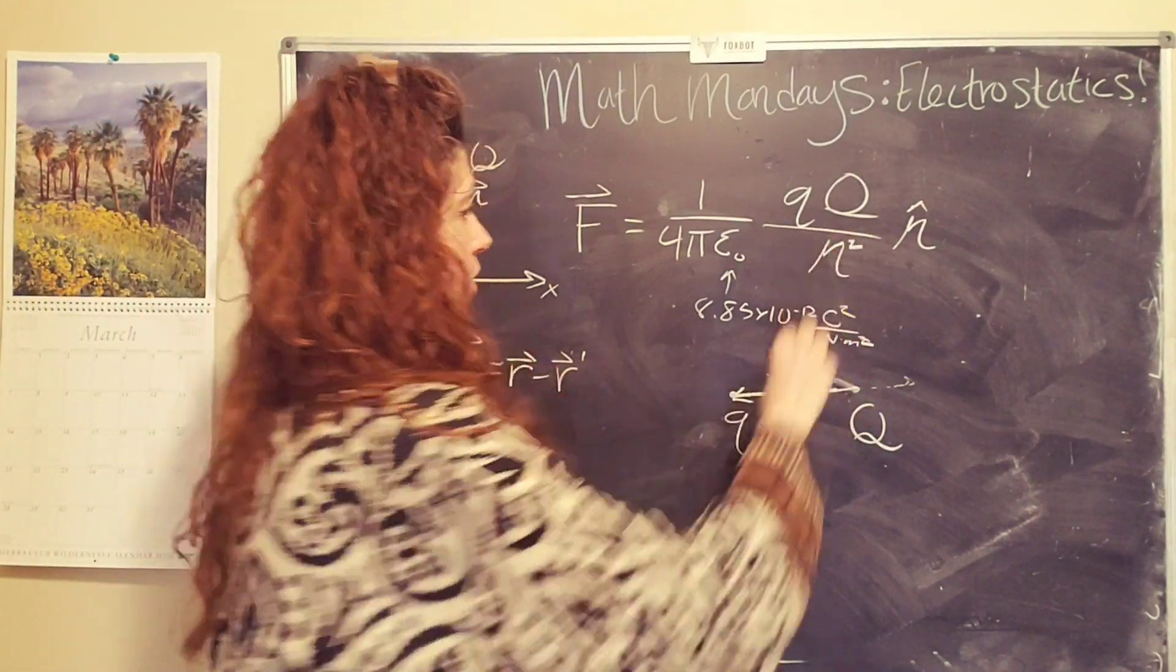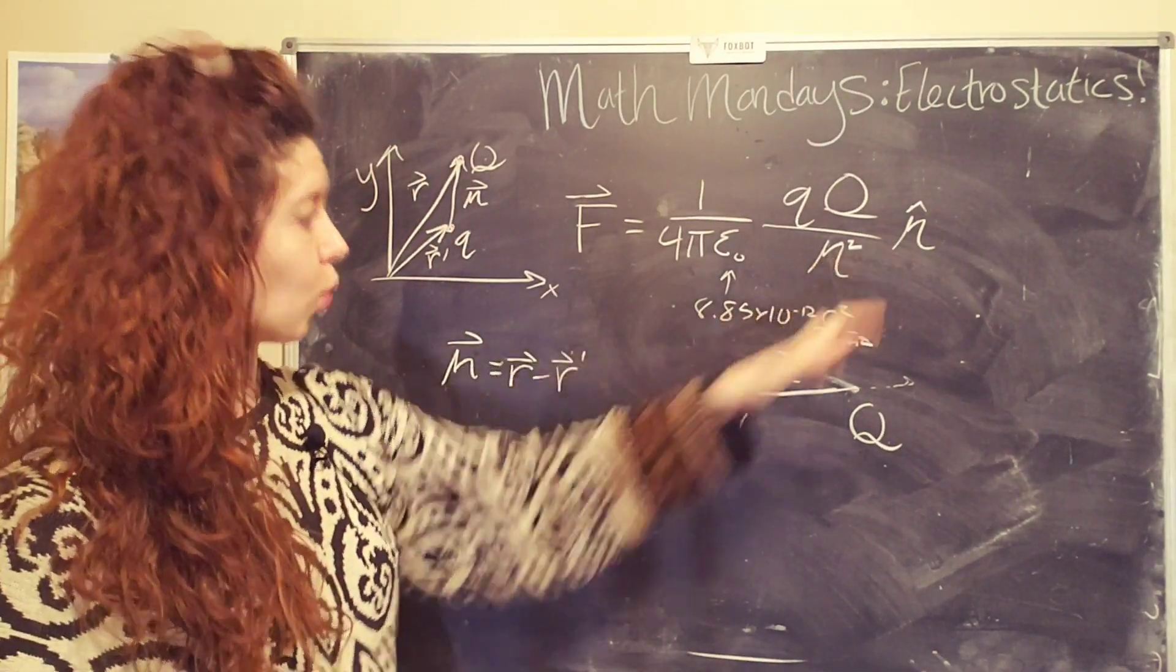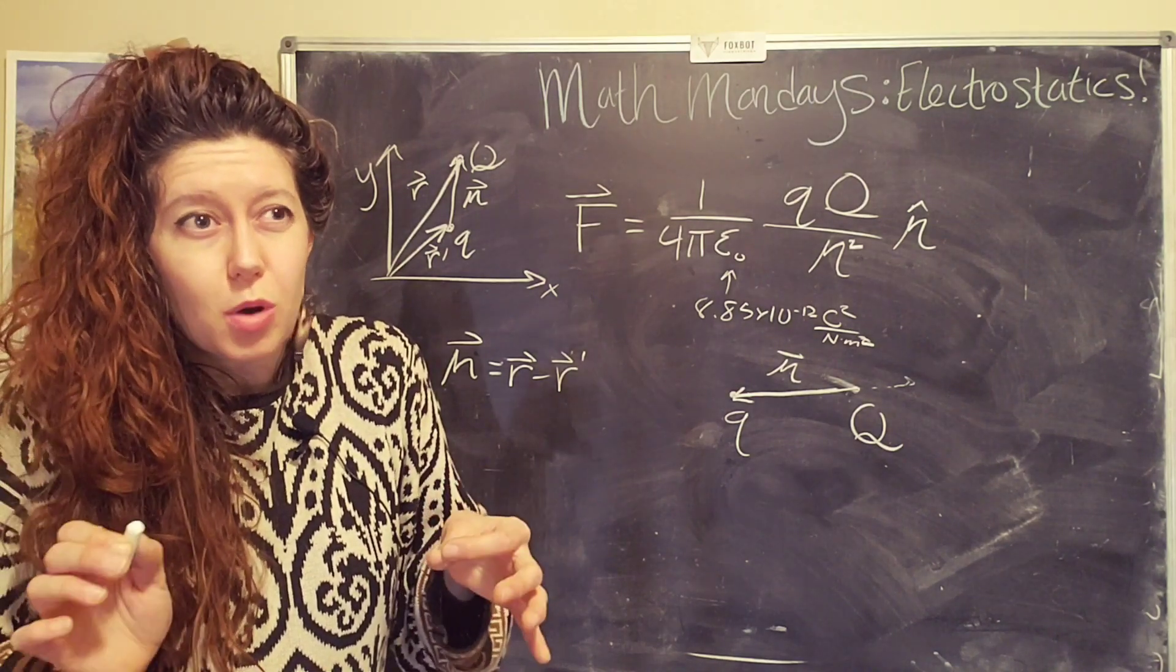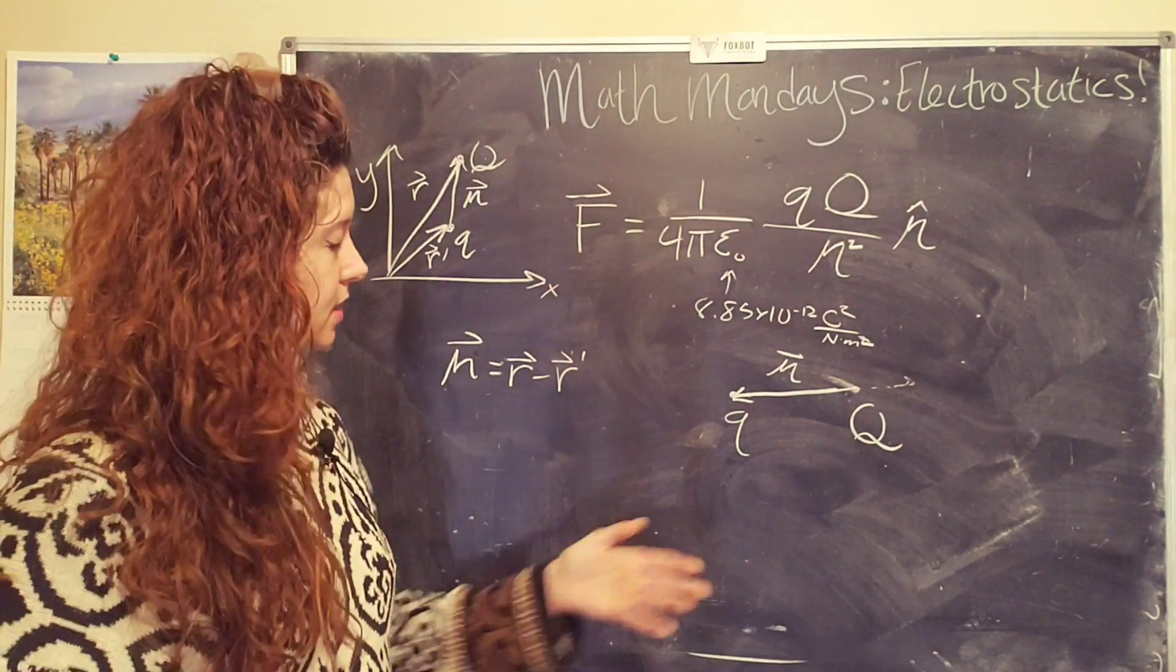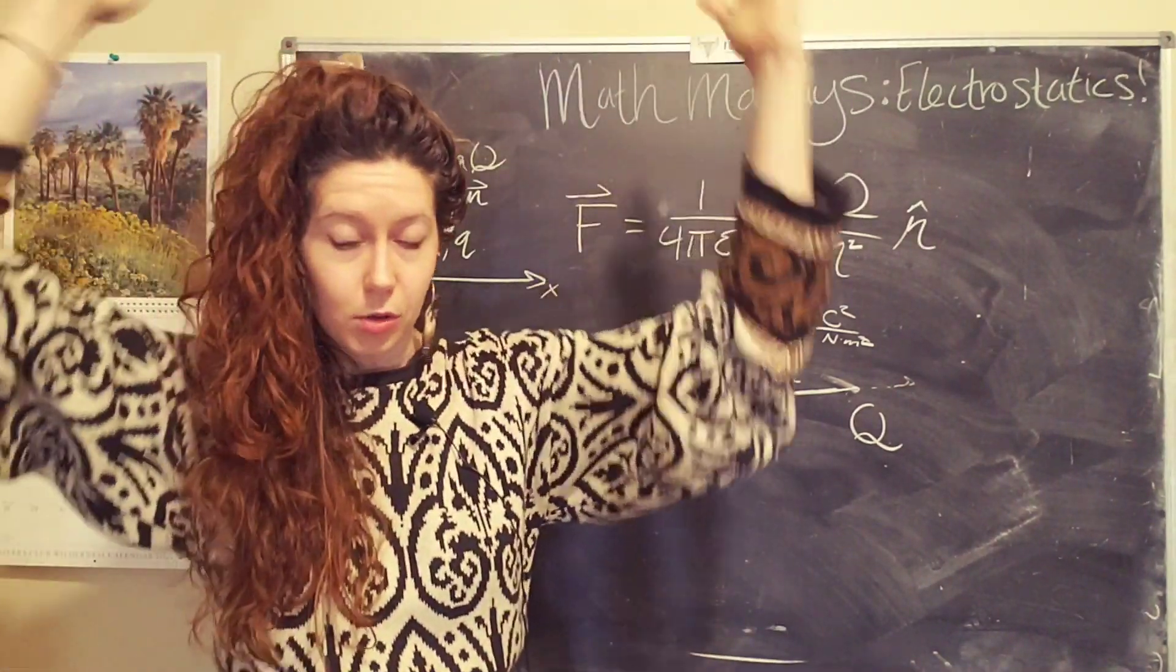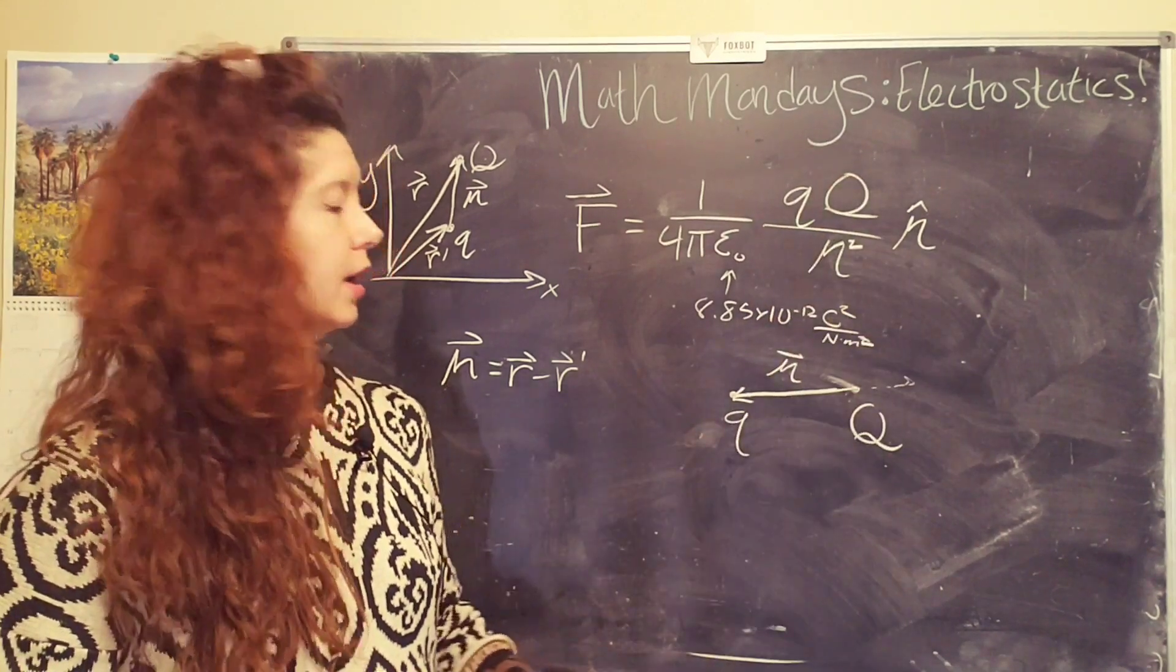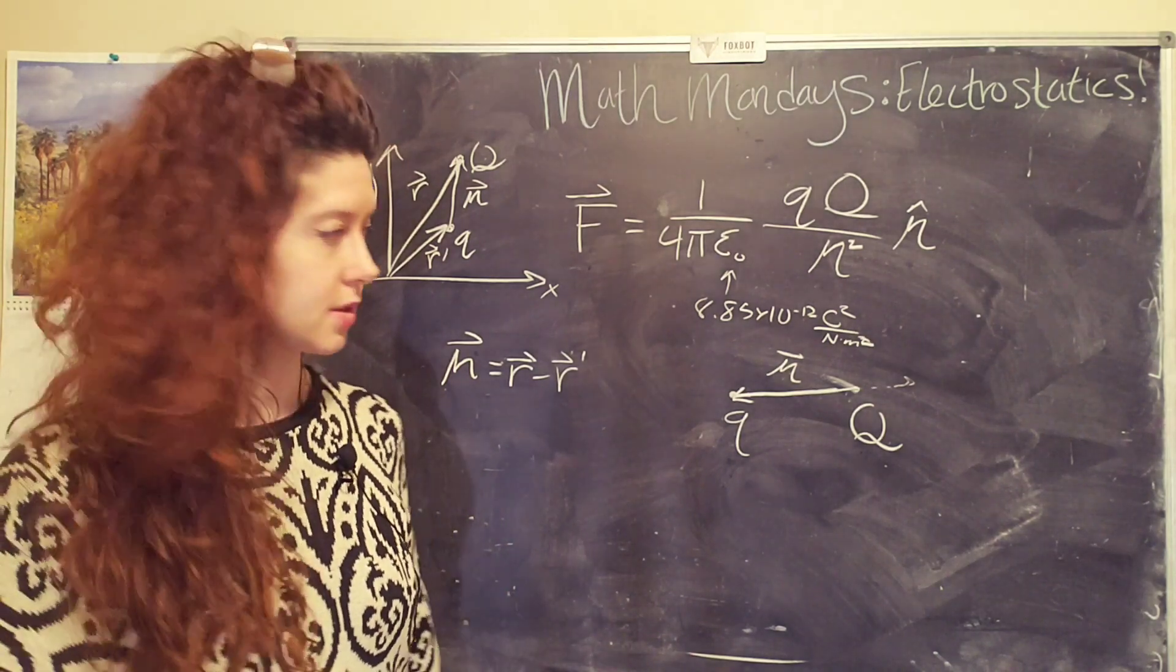And the other thing that we can change is the distance between the two. So because this is inversely proportional to the square of the distance, that means if we move the charges really, really, really far apart, their force between them is going to be super, super, super, super small and they probably won't influence each other at all, at least to our eyes, or our senses. And so if we move them really, really close together, it means the force increases a lot and they will interact a lot more in the same way that increasing the charges increases the force. If we decrease the distance between the two of them, the force will increase. Super cool.